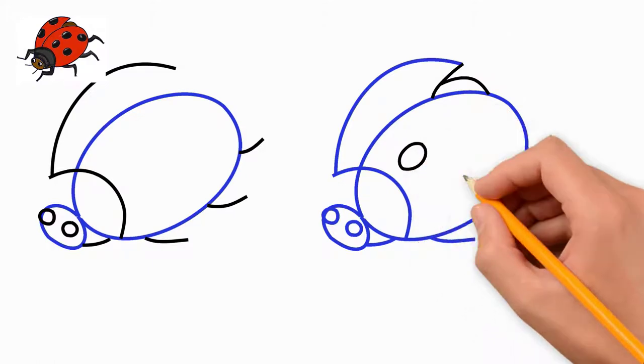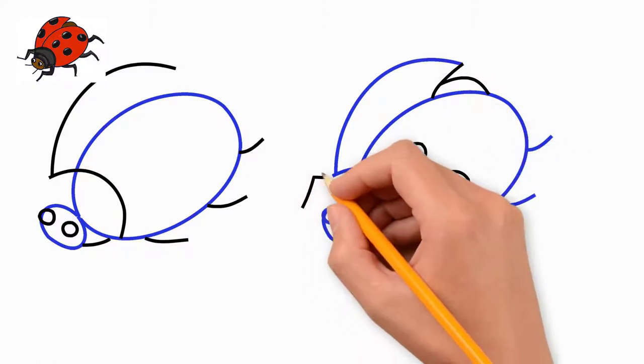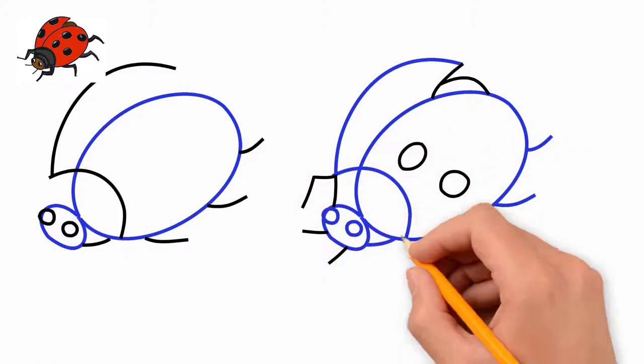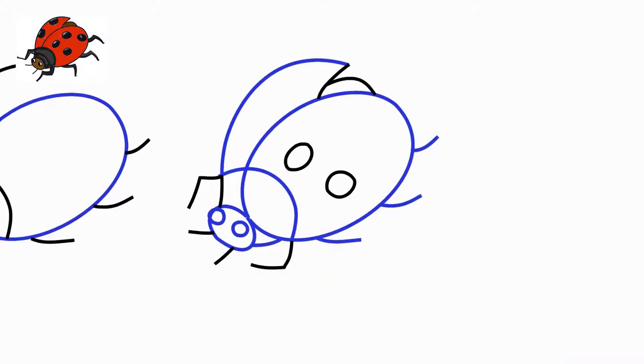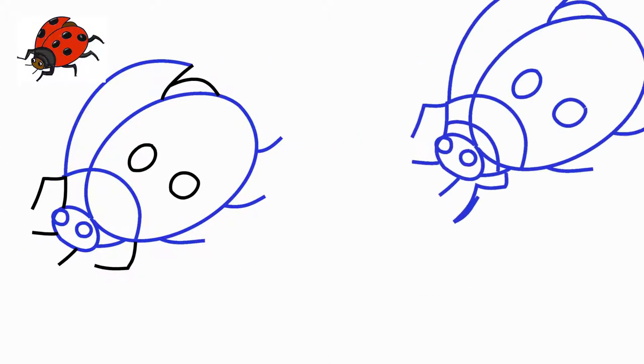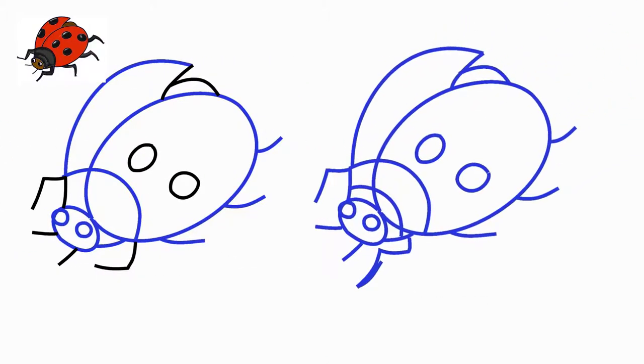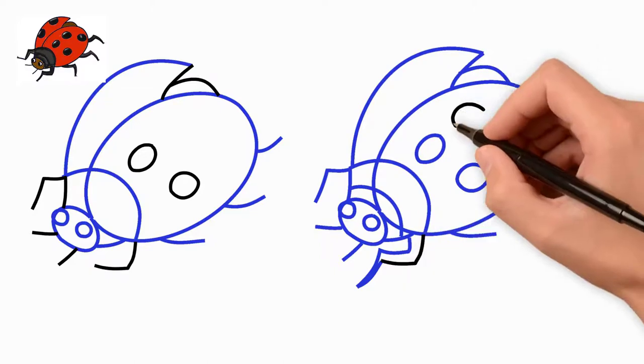We are also finishing the front paws and part of the wing and torso. Step 4. Draw circles on the torso. We draw all paws three-dimensional and draw details. Now our ladybug looks realistic.